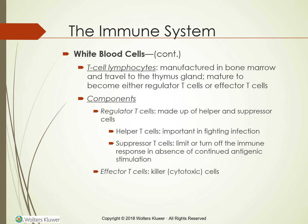T-cell lymphocytes are manufactured in the bone marrow and travel to the thymus gland, where they mature to become either regular T-cells or effector T-cells. Regular T-cells are made up of helper and suppressor cells. Effector T-cells are killer or cytotoxic cells. Helper T-cells are especially important in fighting infection. They recognize antigens, which are protein markers on cells, and form additional T-cell clones that stimulate B-cell lymphocytes to produce antibodies against foreign antigens. Antibodies are chemical substances that destroy foreign agents such as microorganisms. Helper T-cells are also called T4 cells or CD4 cells.